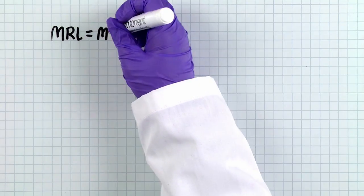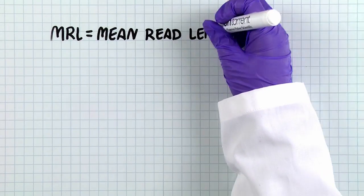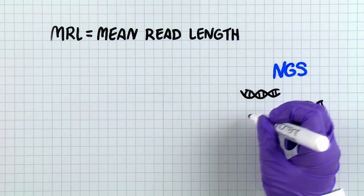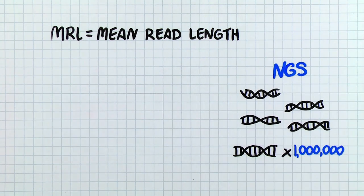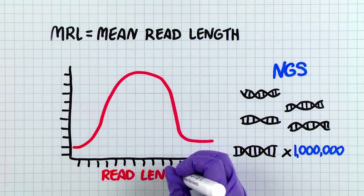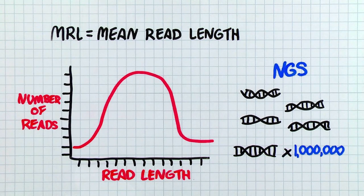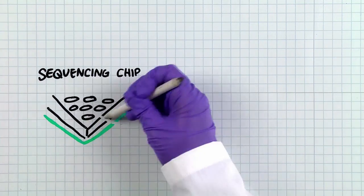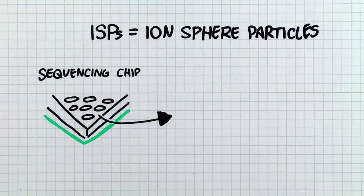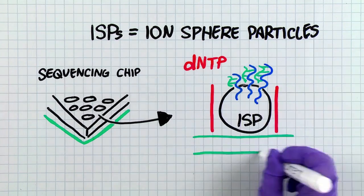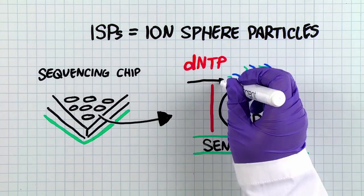As for MRL, this is in reference to mean read length. In NGS, because you generate millions of reads or fragments of DNA, the length of the read can vary in size. Hence, there is an average or mean length of the read. Ion Torrent users are also concerned with ISPs, or ion sphere particles. The more ISPs you have, the more reads that can be sequenced.